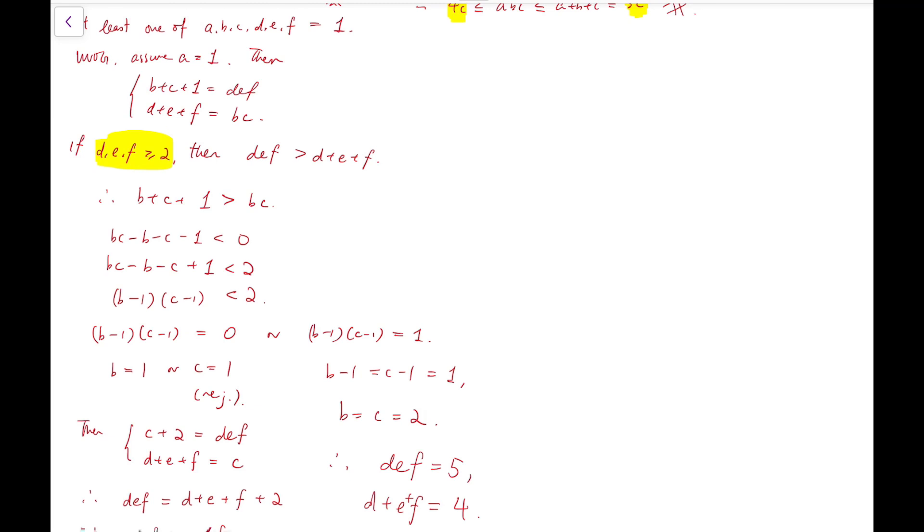After dealing with the case under the assumption that d, e, and f are all at least two, then the remaining case is just that otherwise, at least one of d, e, and f equal to 1. And the system becomes b plus c plus 1 equals ef, and e plus f plus 1 equals bc.